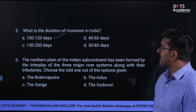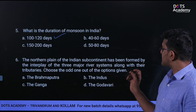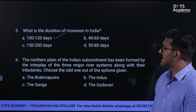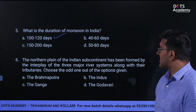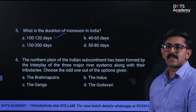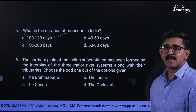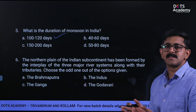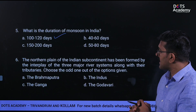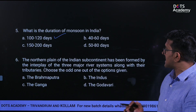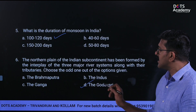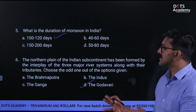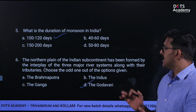The North Plains of the Indian subcontinent have been formed by the interplay of three major river systems along with their tributaries. Choose the odd one out: Ganga, Brahmaputra, Indus, and Godavari river. Godavari river is located in Peninsular and South India, not the North Plains. The correct odd one out is option D, Godavari river.